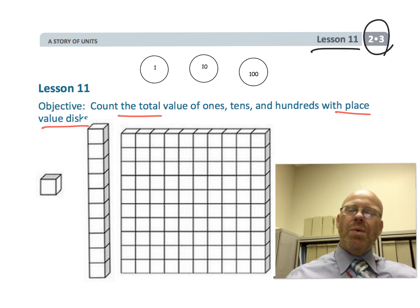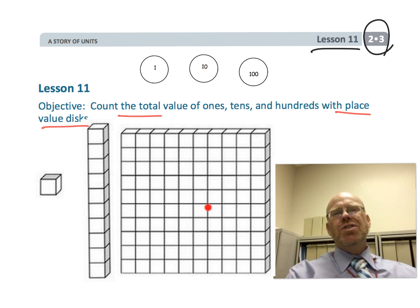So that's where we're going. We're going from the concrete, the base 10 blocks, to the place value disks and just gradually making numbers more abstract.